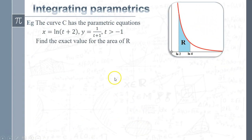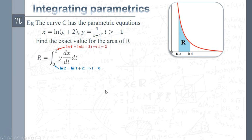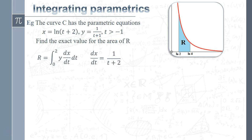Let's have a look at one that's not quite so straightforward. Again we've got the area of the curve between two limits in terms of x. We integrate y·(dx/dt) with respect to t, and I've already done the change of limits so they're in terms of t — you can see those values in red and blue, giving t = 2 and t = 0. Differentiating x = ln(t + 2) gives dx/dt = 1/(t + 2). So we need to integrate y · 1/(t + 2), where y = 1/(t + 1), giving us 1/[(t + 1)(t + 2)].